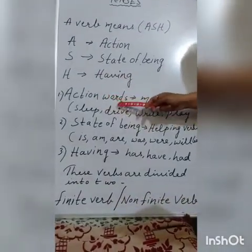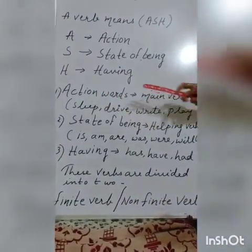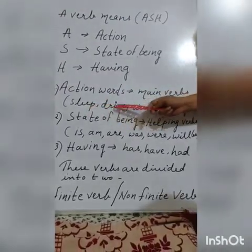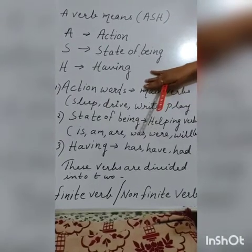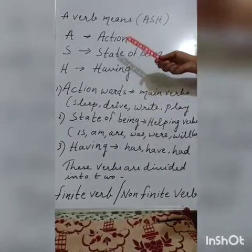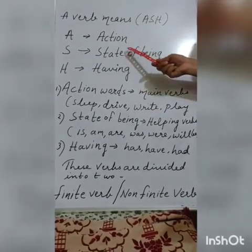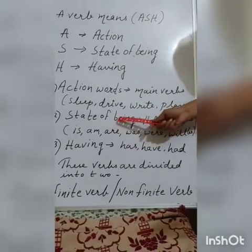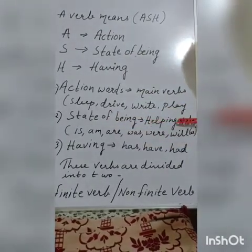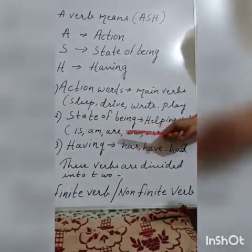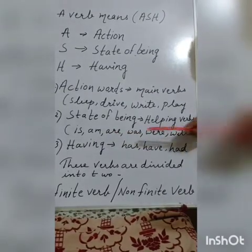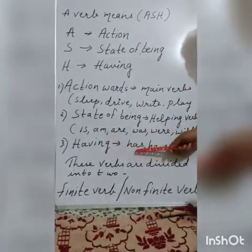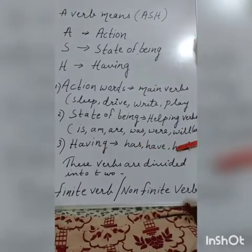Action words are the main words. Like you must have heard: sleep, drive, write, play. These are the action words, or you can say main verbs. Second one, state of being — that stands for helping verbs. That is: is, am, are, was, were, and will be. And having is for has, have, and had.